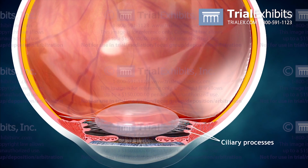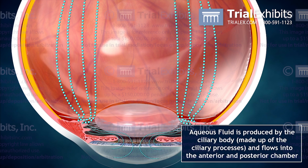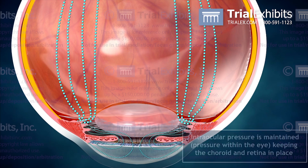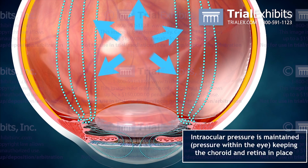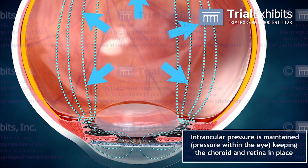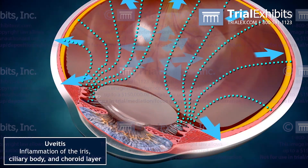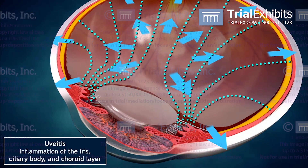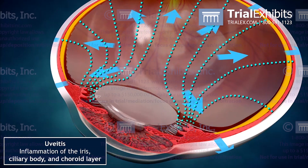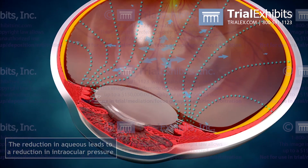Such as the maintenance of pressure inside the globe. Here we can see how fluid released by the ciliary bodies in the front of the eye circulates back to the globe, maintaining pressure outward on the walls of the eye.